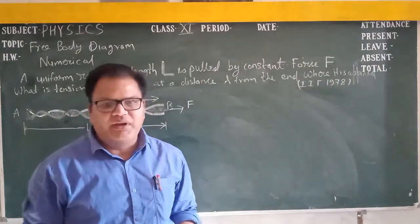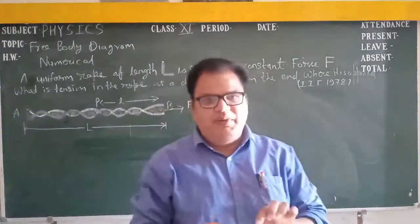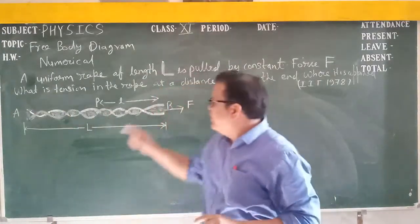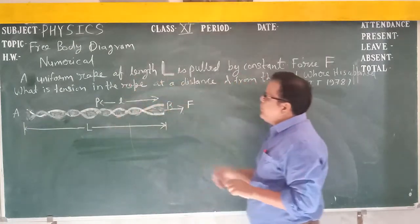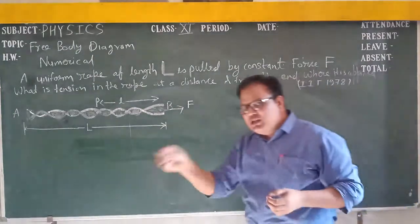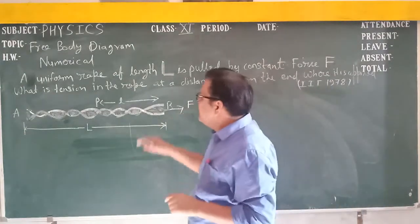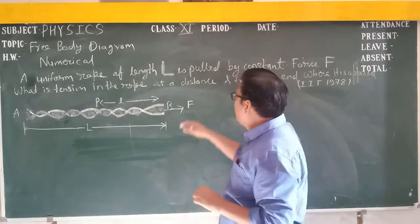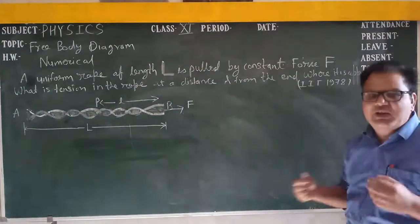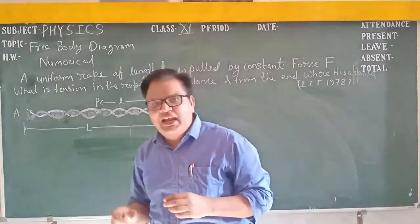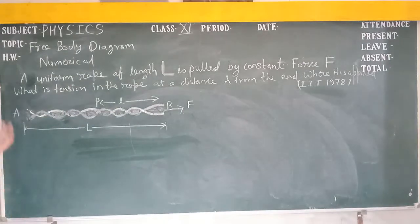This is a uniform rope — it means throughout, all the cross-section area of the rope is the same. A uniform rope of length L, as shown in the figure, rope AB with length L, is pulled by a constant force. We have to find the tension in the rope at a distance small l from the end where the force is applied.